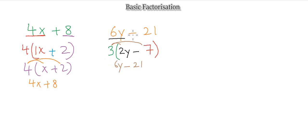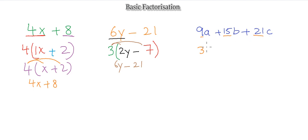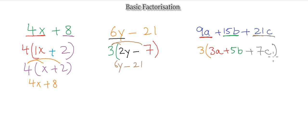Let's try a trickier one: 9a + 15b + 21c. The common factor of all three numbers is 3. The variables a, b, and c are all different, so none can go outside the bracket. So: 3 times 3a gives 9a, 3 times 5b gives 15b, and 3 times 7c gives 21c. The factorized form is 3(3a + 5b + 7c).